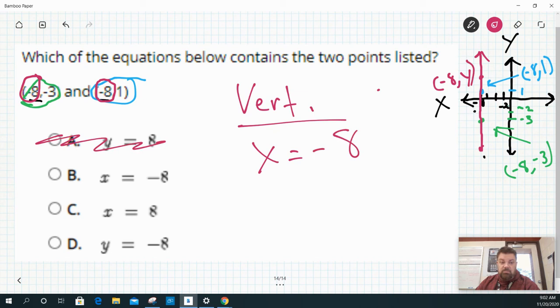So the y equations aren't it. And x = 8 isn't it. So it's x = -8 because that's the x value that's on both points. And x = 8 isn't it because it's positive 8. And that is basically it.